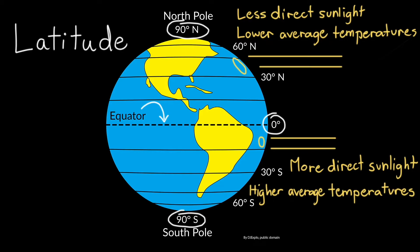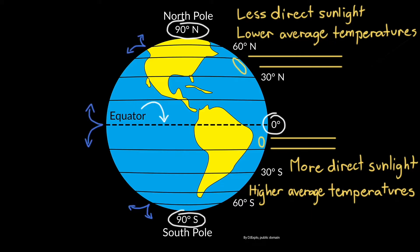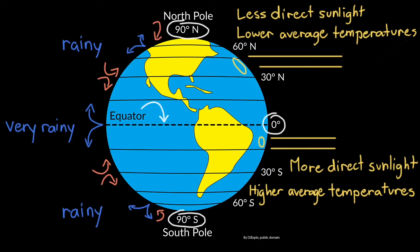This uneven heating creates a pattern of low and high air pressure bands from the equator to the poles, affecting the amount of precipitation that the different latitudes receive. In bands where moist air is rising, mainly at zero degrees latitude and 60 degrees north and south, places experience a lot of rainfall, especially around the equator. In bands where dry air is sinking, like at the poles and 30 degrees north and south, places experience very little rainfall.